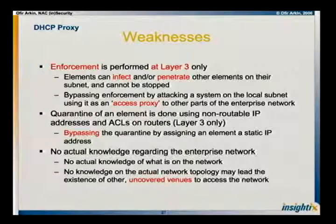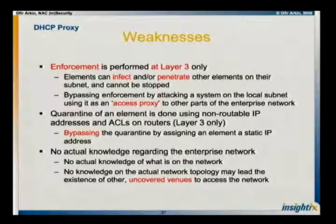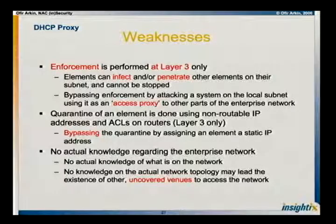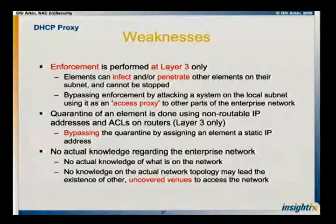Quarantine is usually based on giving the element an IP address belonging to a certain subnet and quarantining it using ACLs on routers — again, easily bypassed. Another main problem is that users may access the network from different parts of the network, and not all of these parts would have DHCP enabled. If you know where you need to connect your machine, you can connect and you have access.